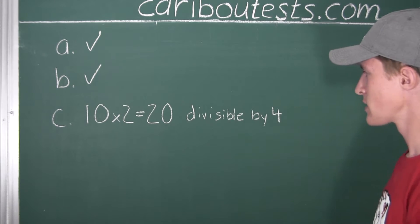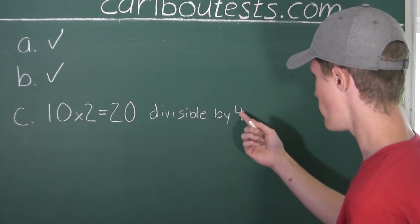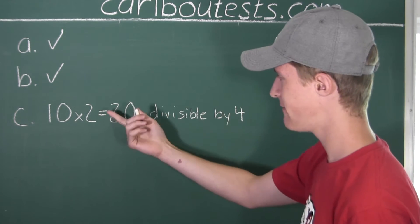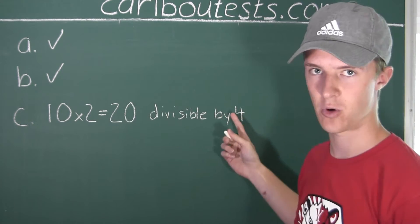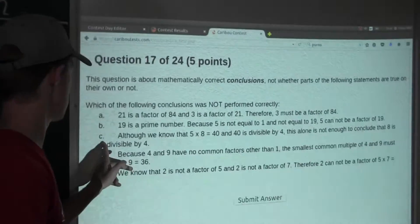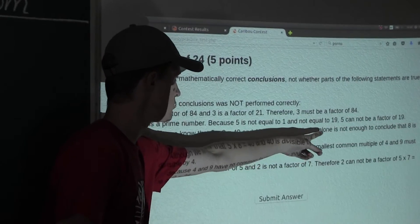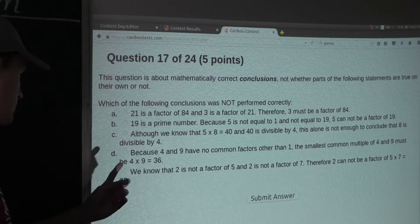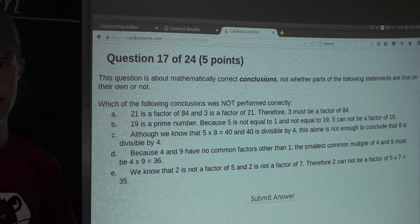Okay. So, we know that this product, 20, is divisible by 4, but we know that 4 is not a factor of 2, and 4 is not a factor of 10. And, since in the statement, it says this alone is not enough to conclude, well, it's true. It is not enough to conclude. Therefore, option C must also be true.